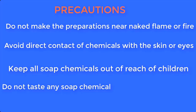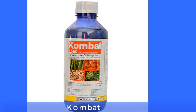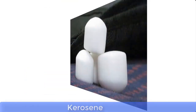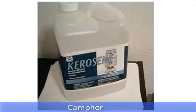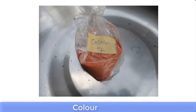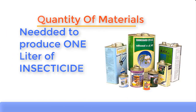Now let's go through the list of materials needed for this production. Number one is compact, number two is eucalyptus oil, number three is camphor, number four is kerosene, and number five is isopropyl alcohol, also known as IPA. Number six is color. Please note that the solvent used for this preparation is kerosene.